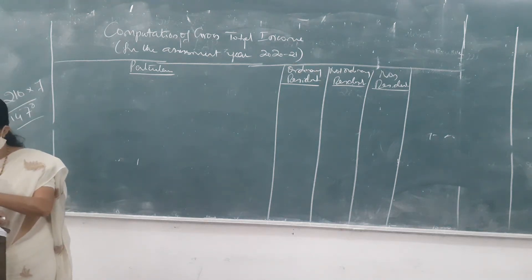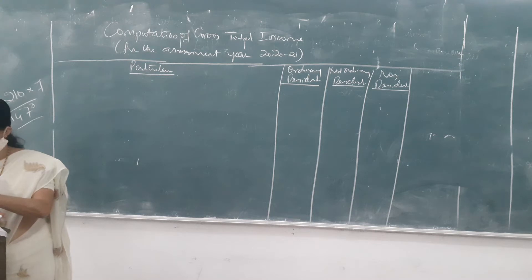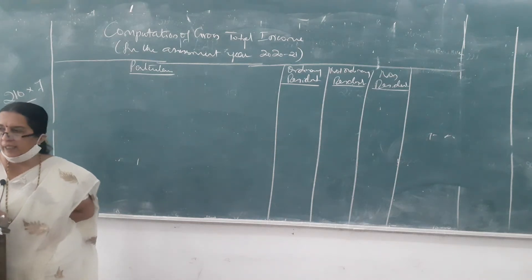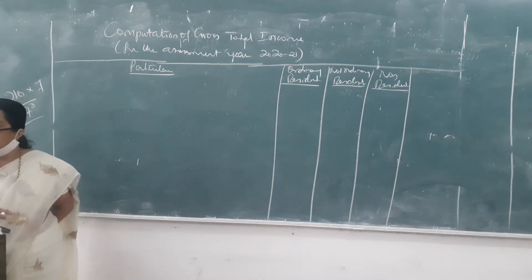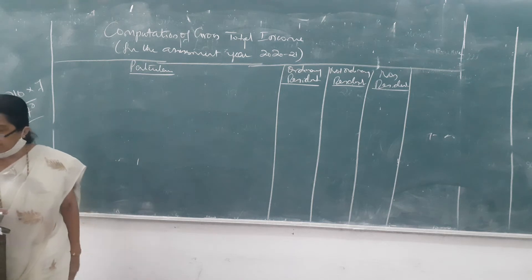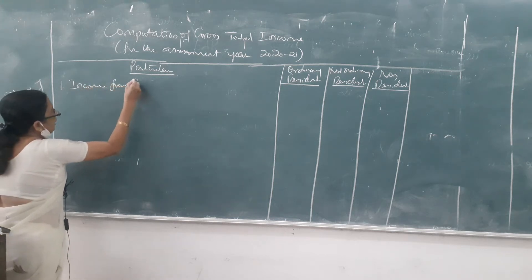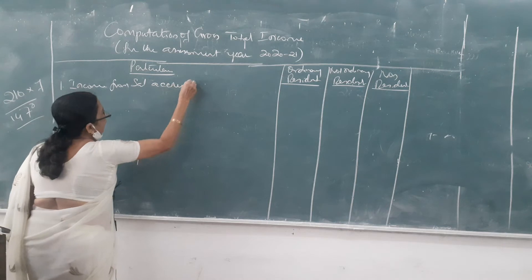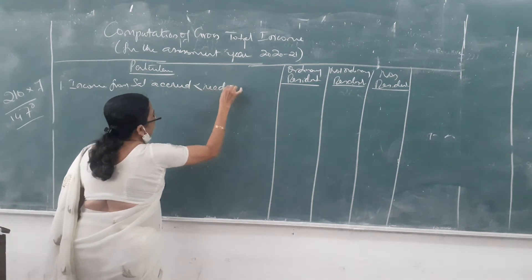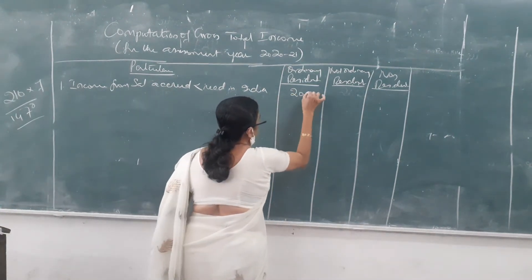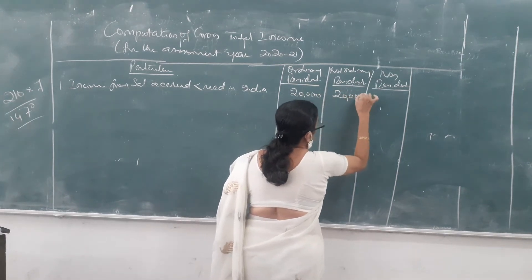Income from salary accrued and received in India — 20,000. This income is earned and received in India, so it is applicable to all three categories: ordinary resident, not ordinary resident, and non-resident. Amount: 20,000 for each.